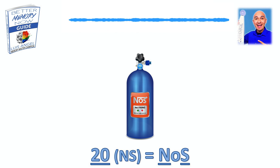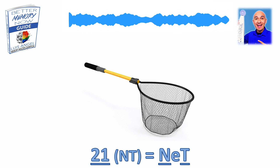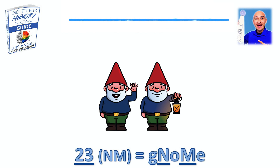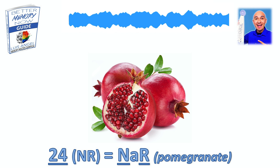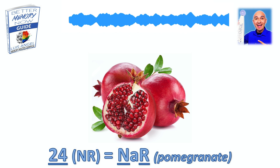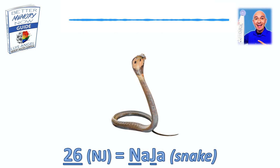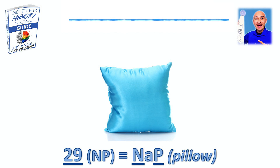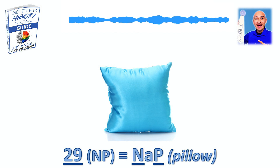Quick review: 20 was Noz. 21, Net. 22, Neon. 23, Gnome. 24, Gnar or Pomegranate. 25, Nail. 26, Nausea or Cobra. 27, Nog — like egg nog. 28, Knife. And 29, Nap or Pillow.